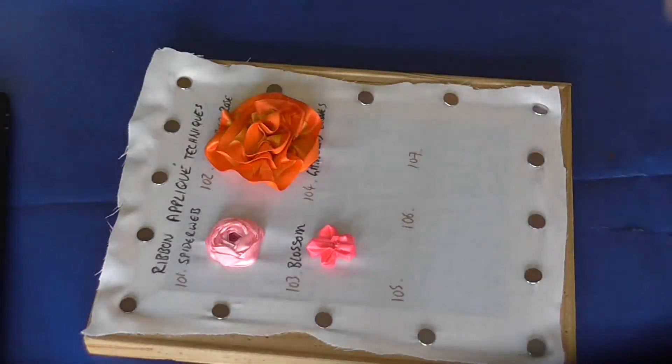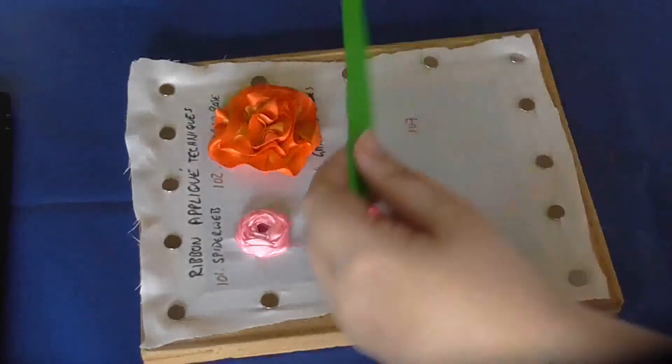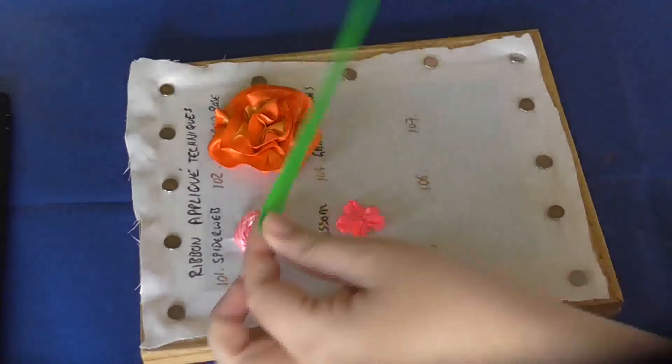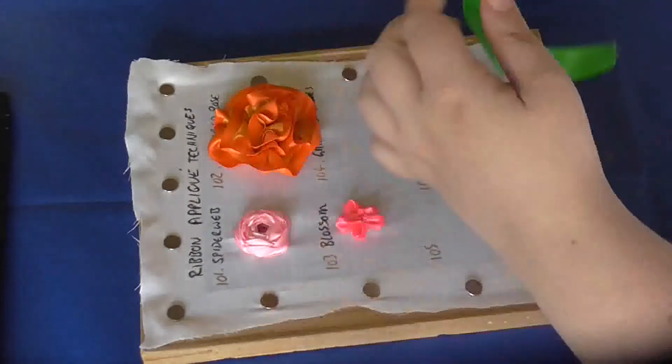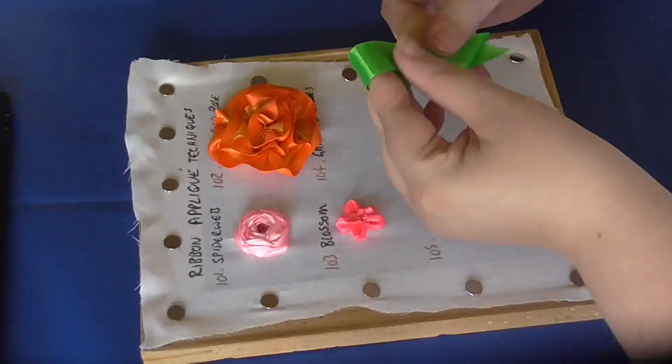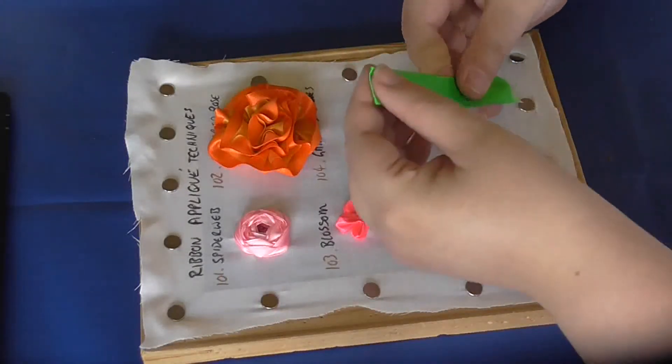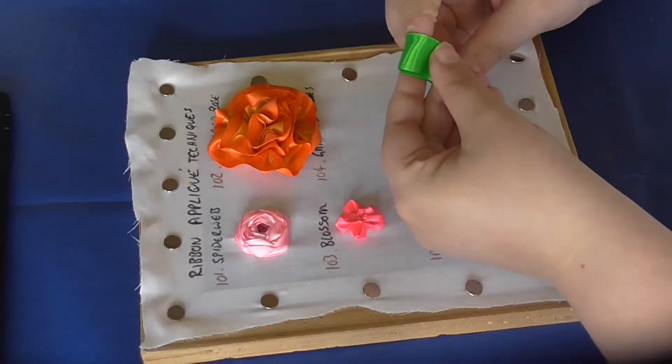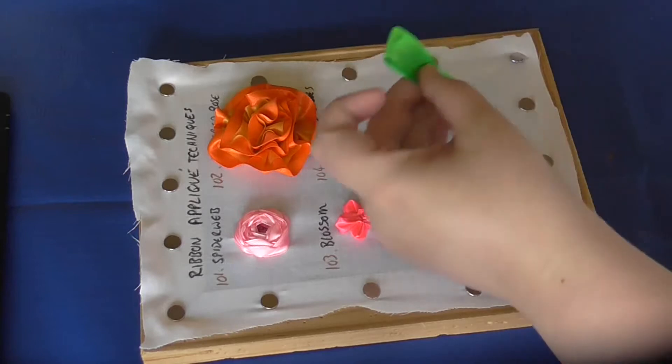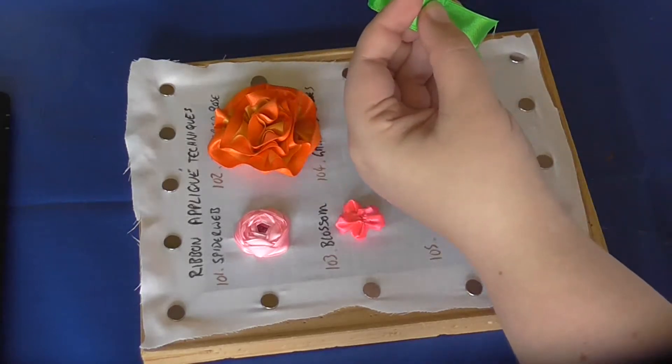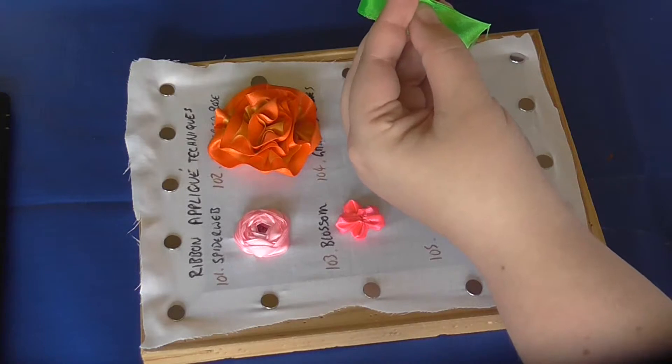These use pretty much the same technique and are an ideal way to use up scraps of fabric. Start with a piece of fabric or ribbon, fold it in half, then fold it down again to make the size of leaf you're going for. Stitch through at the bottom.